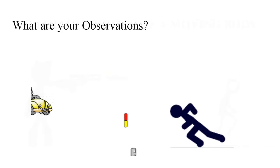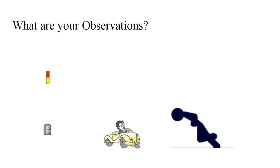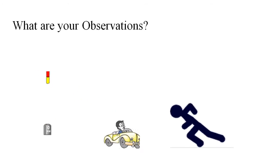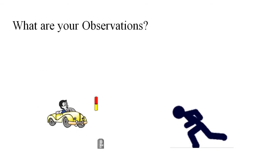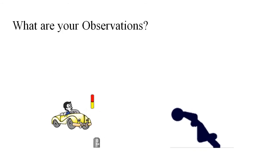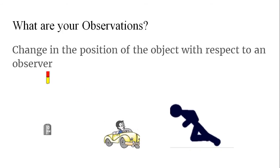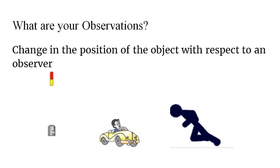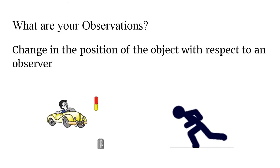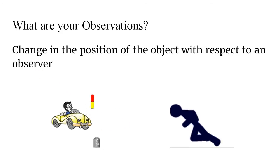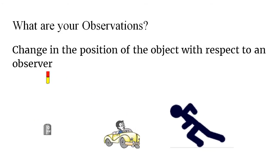Coming to the concept of a moving body — when you observe a moving body, what is the first characteristic that you observe? For example, if you are standing on a road and you observe a car moving on the road, obviously it is a change in the position of the car with respect to you. Here you are the observer, and you observe that the car has changed its position from time to time.